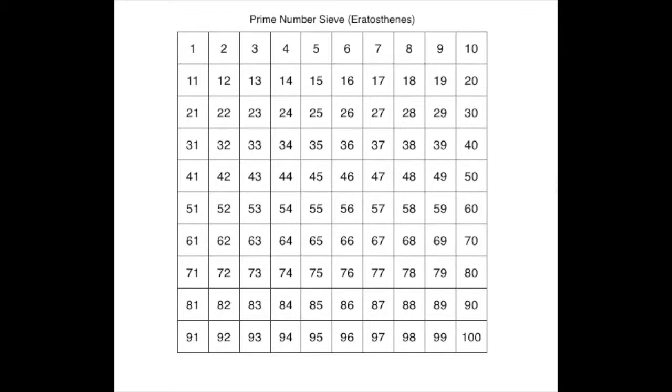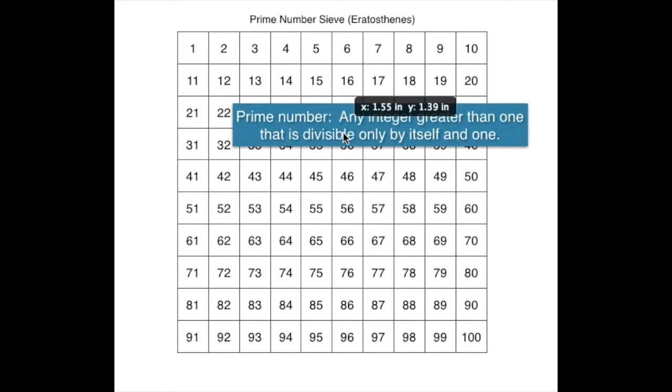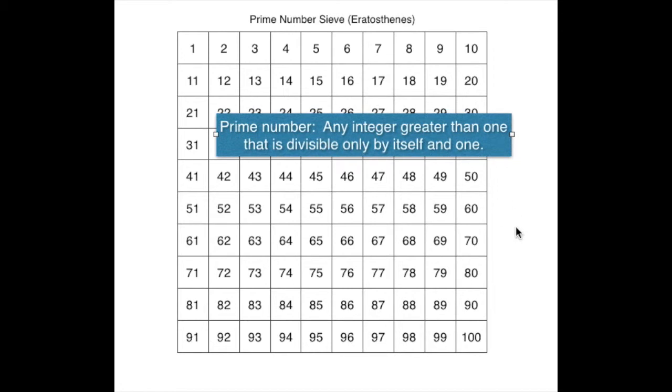Let's do a prime number sieve. Let's sift out the prime numbers between 1 and 100. What is a prime number? A prime number is any integer - an integer is a whole number, not a fraction.